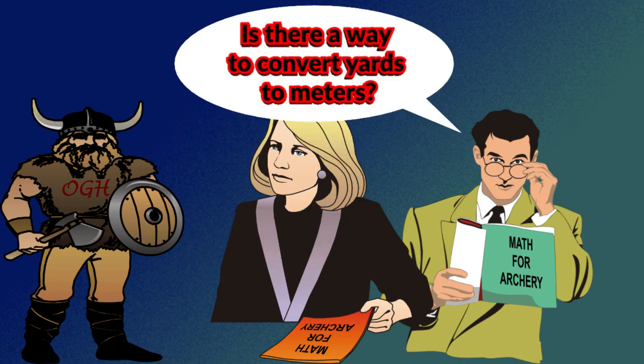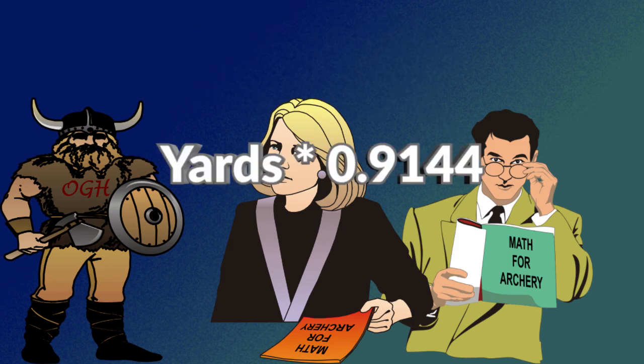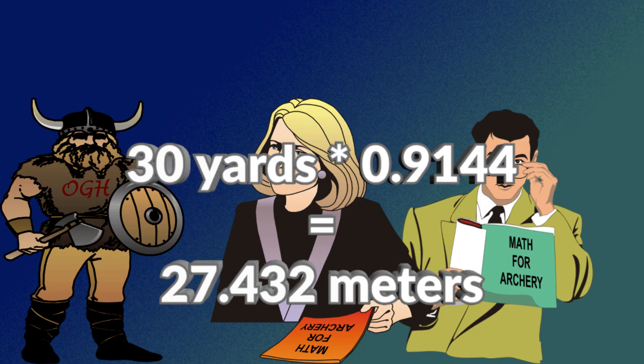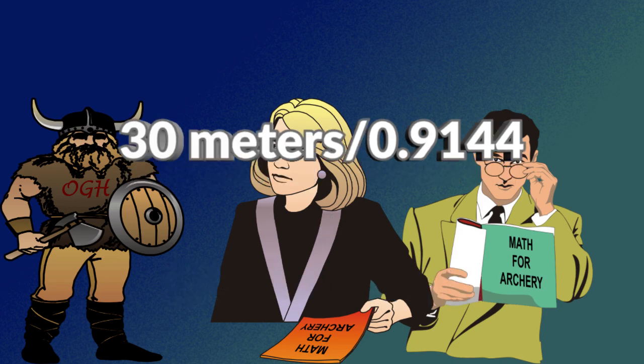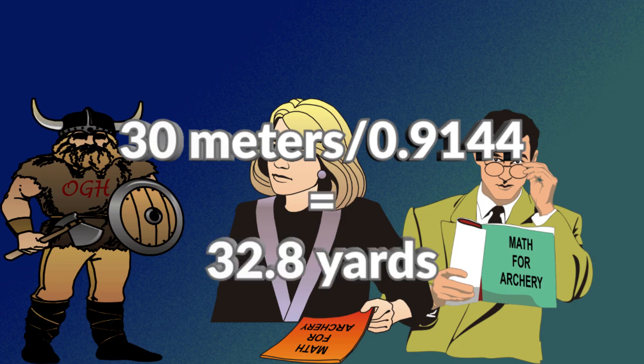Is there a way to convert yards to meters? Just multiply yards by 0.9144. 30 yards times 0.9144 equals 27.432 meters. To change meters to yards, divide meters by 0.914. 30 meters equals 32.8 yards.